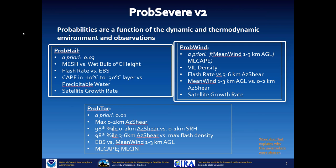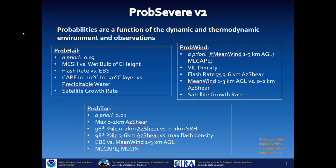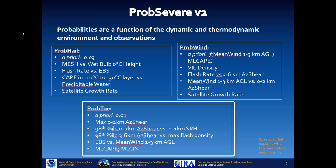PROB HAIL, PROB WIND, and PROB TOR comprise PROB SEVERE all hazards. The probabilities are a function of the dynamic and thermodynamic environment, defined by models, and also of observations. For example, PROB HAIL includes observations of hail size via MESH, and satellite growth rate. PROB WIND also includes satellite growth rate. PROB TOR does not include satellite growth rate.